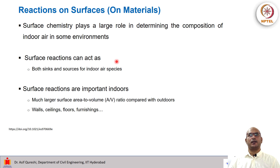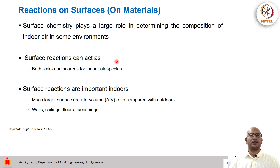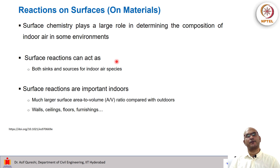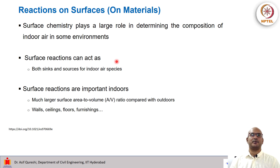For example, some species are formed in the air and may deposit down. Some species may be formed when gases such as ozone react with an organic layer on the surface, leading to a chain of reactions producing radicals, which then lead to the formation of secondary organic aerosols. Depending on their size, these aerosols may stay in the air or deposit back to the surface, making this process quite complex.